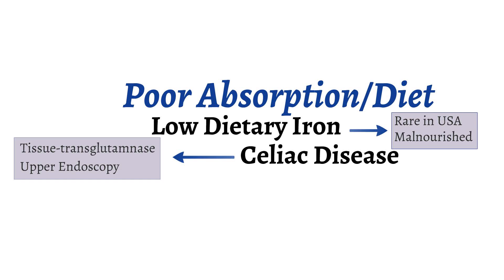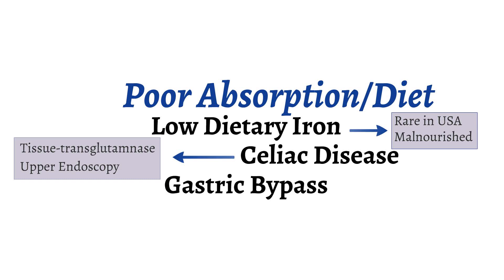Another reason for poor iron absorption is gastric bypass surgery. In a gastric bypass, a small portion of the stomach is routed to the jejunum, and the rest of the stomach and duodenum is attached farther down the digestive pathway. As a result of this bypass, food does not pass the duodenum, leading to poor iron absorption. It's important that patients with gastric bypasses be supplemented with vitamins, such as iron and B12, to prevent deficiencies.